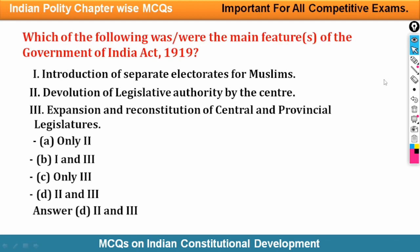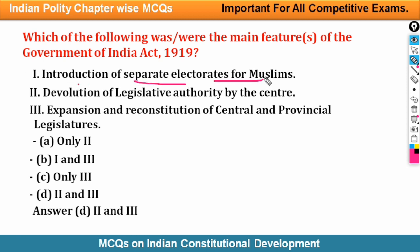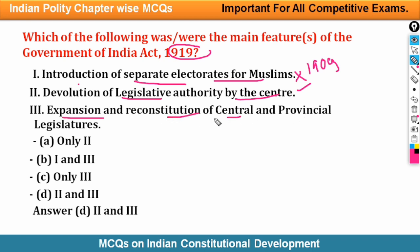Question: Which of the following was the main feature of the Government of India Act 1919? Option 1, introduction of separate electorate for Muslims, is incorrect — that was introduced by the Act of 1909 as studied in the previous slide. Option 2, devolution of legislative authority by the centre, is correct. Option 3, expansion and reconstitution of central and provincial legislatures, is also correct. Therefore, the answer is option D.